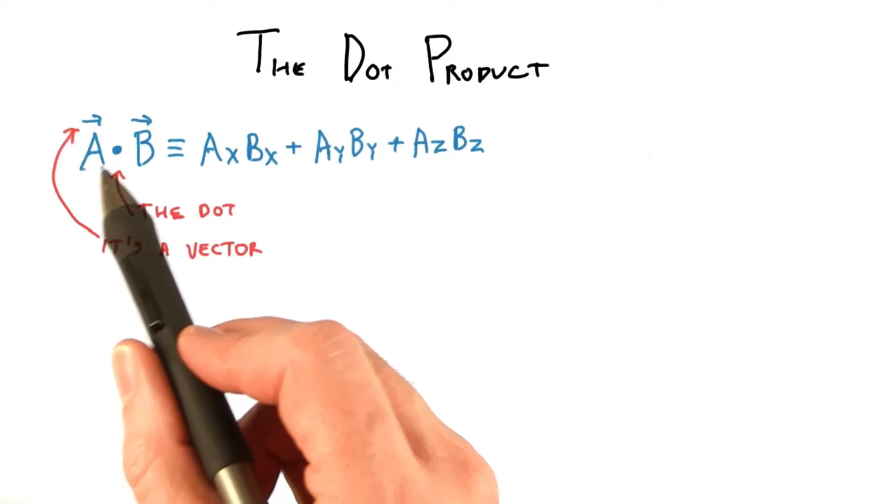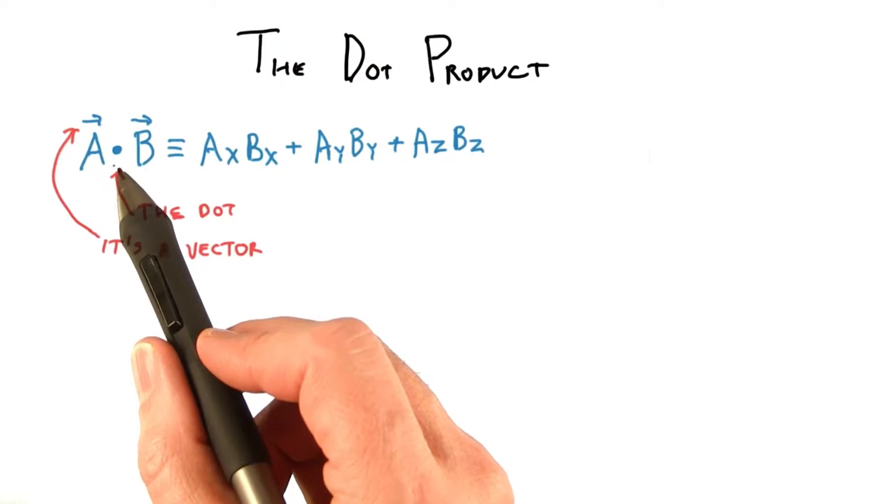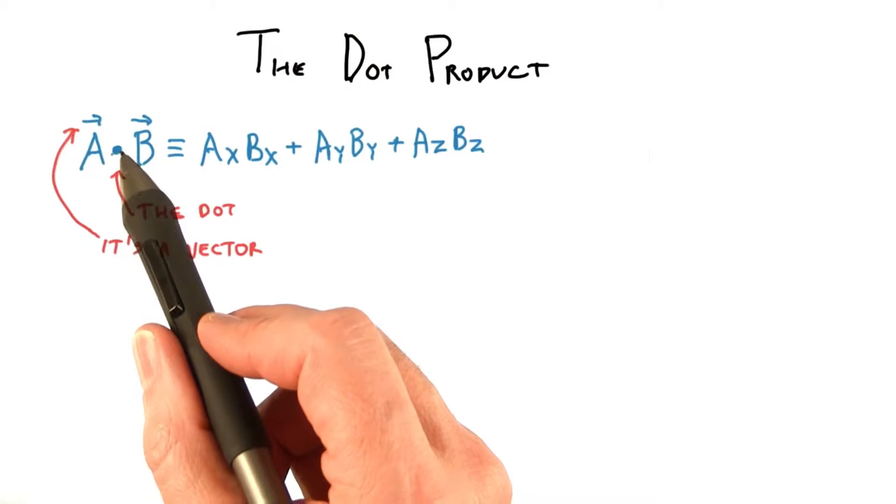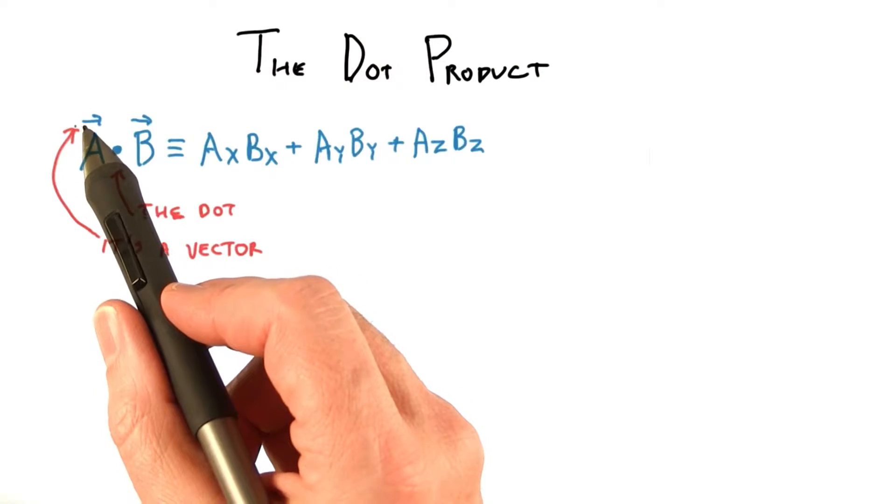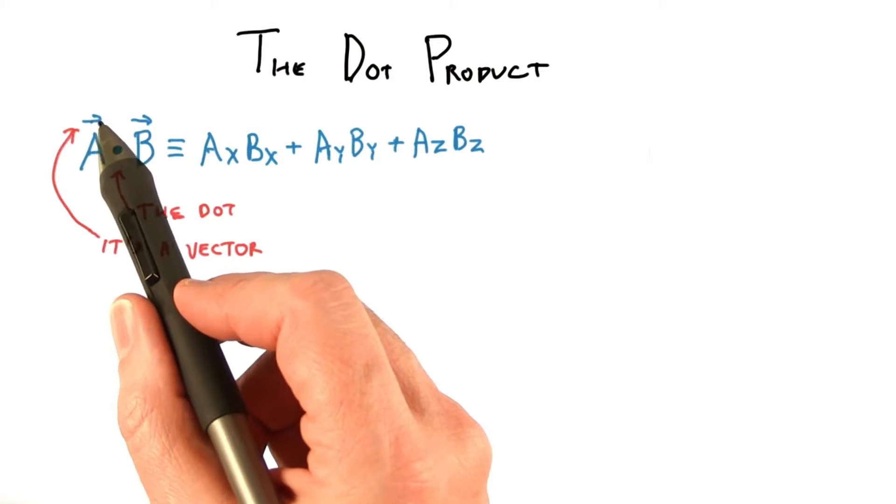Given two normalized vectors, the cosine of the angle between them is computed by the dot product operation. So this is the dot, it's a big dot, and these are denoted as vectors by putting arrows over them.